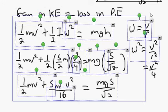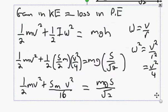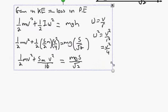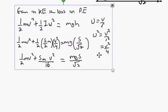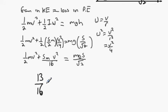We need to get V on its own so we can then get A on its own using V² = U² + 2AS. Adding half to 5/16 gives 13/16. So: 13/16 × M × v² = M·G·S divided by root 2.